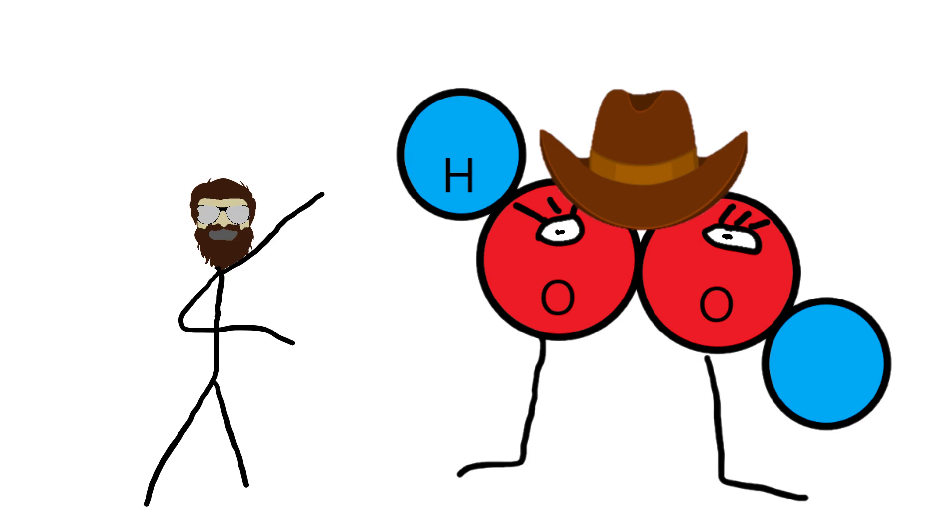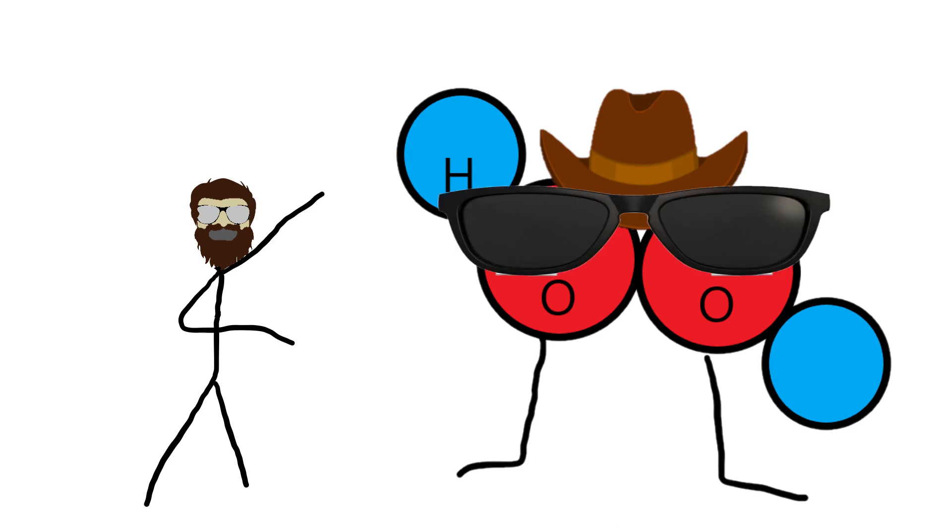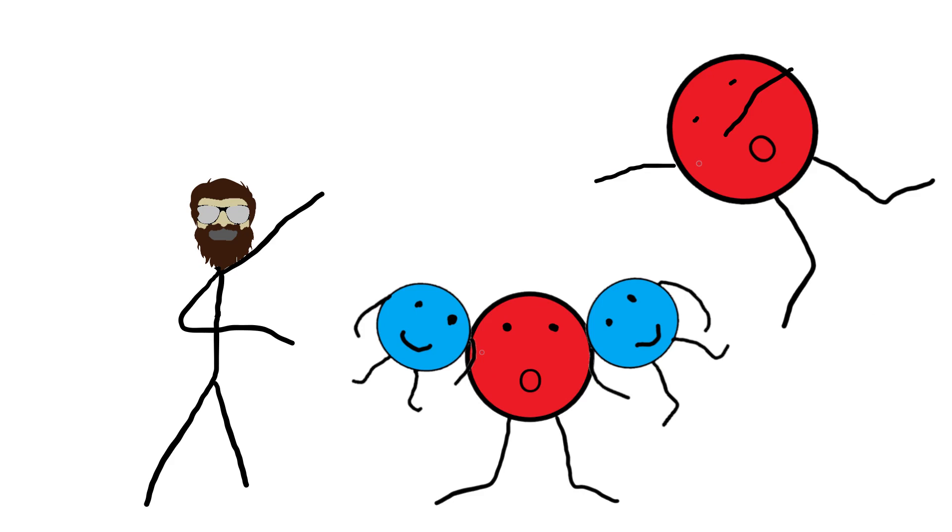It is unstable and will decompose in the presence of light. Basically, a very low amount of energy is needed for H2O2 to release one of its oxygens, turning it into normal water and oxygen gas.